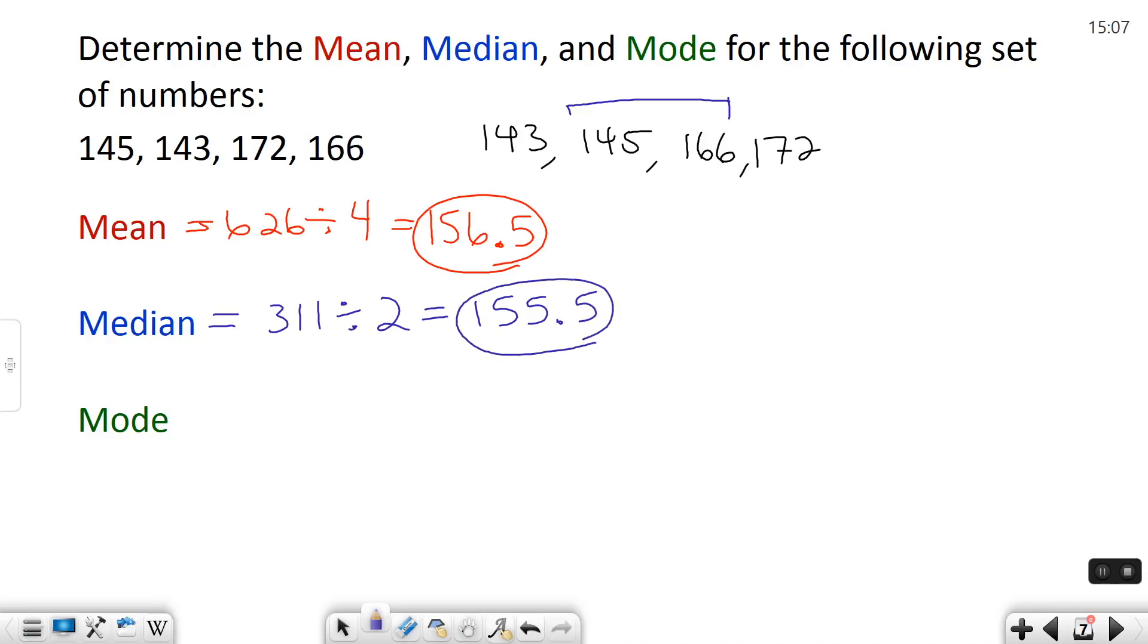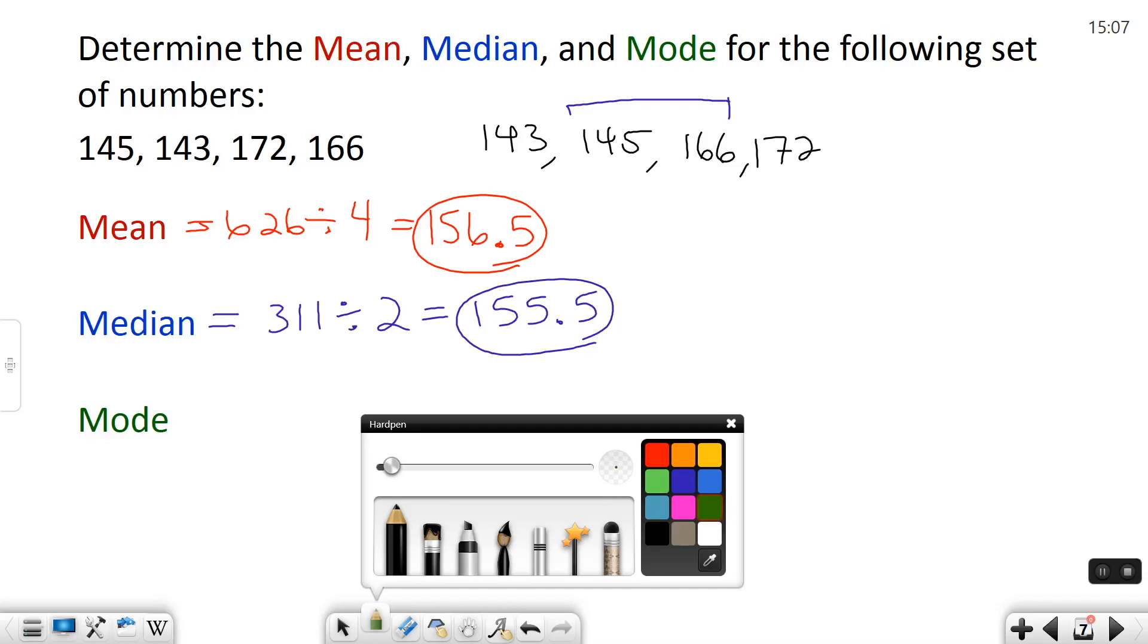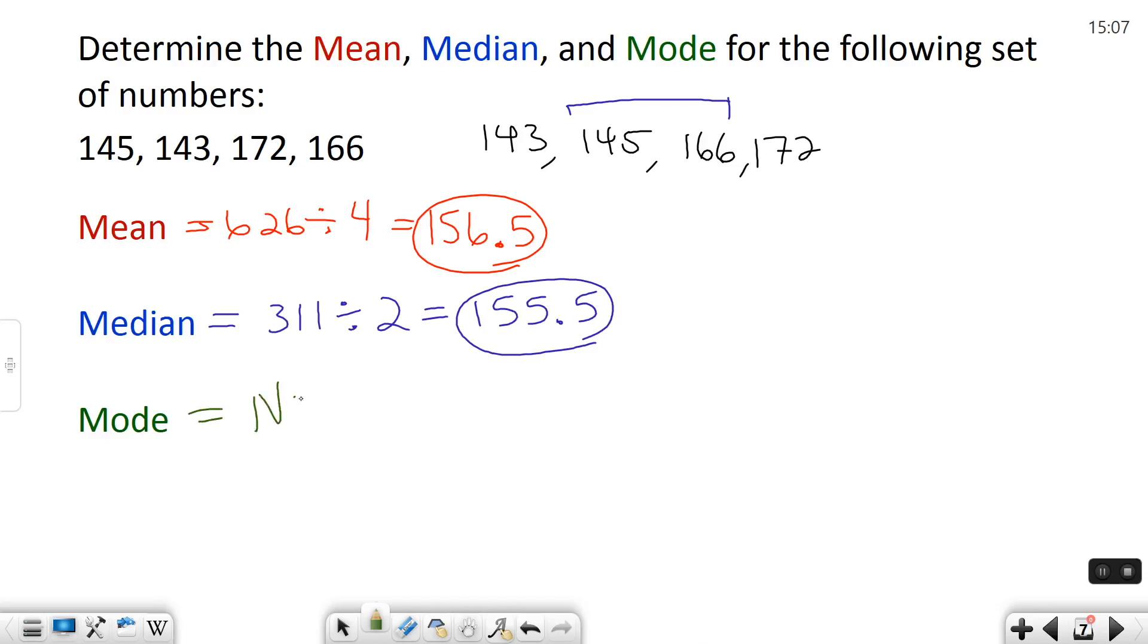Now let's look for the mode. The mode is the number that occurs the most. Well in this case all of our numbers only occur one time, which means there is no mode. There is no number that occurs most often. So in this case our mode is none.